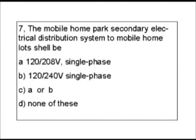You must become more familiar with the code book and the sections of the code book. A lot of people know, well, 250 — that's grounding. But there is a section on mobile homes also.